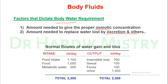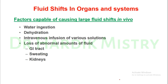Normal routes of water gain and loss: fluid intake is 1100 ml/day, from food around 1000 ml/day, and metabolic water produced during metabolic processes is around 200 ml/day, giving a total intake of 2300 ml. Output includes insensible loss of 700 ml/day, sweat 100 ml/day, feces 100 ml/day, and urine 1400 ml/day, totaling 2300 ml output.